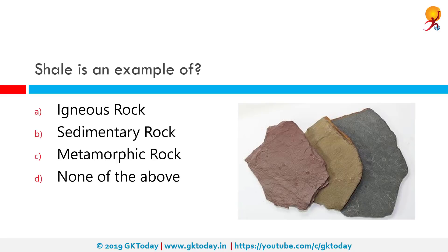Shale is an example of what? The correct answer is sedimentary rock. It's a fine-grained clastic sedimentary rock composed of mud that is a mix of flakes of clay mineral and tiny fragments of other minerals, especially quartz and calcite. Shale is characterized by breaking along thin laminae or parallel layering or bedding less than one centimeter in thickness, called fissility.